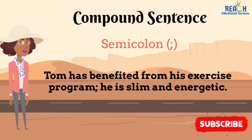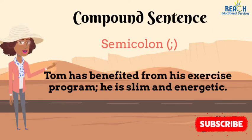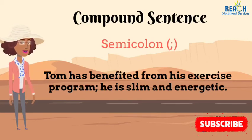The third thing to note about the compound sentence is that you can use a semicolon. According to the Little Brown Handbook, ninth edition, when the relation between the ideas expressed in the main clauses is very close and obvious, without a conjunction you can separate the clauses with a semicolon. For example: Tom has benefited from his exercise program; he is slim and energetic. A simple semicolon is sufficient and the meaning remains the same.